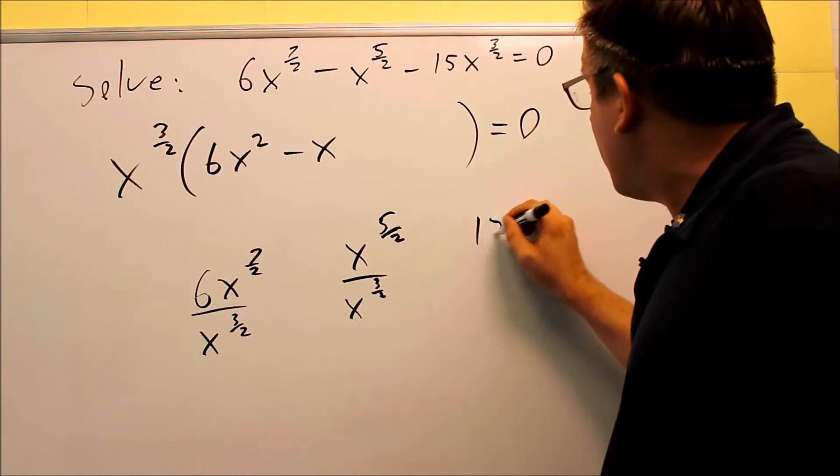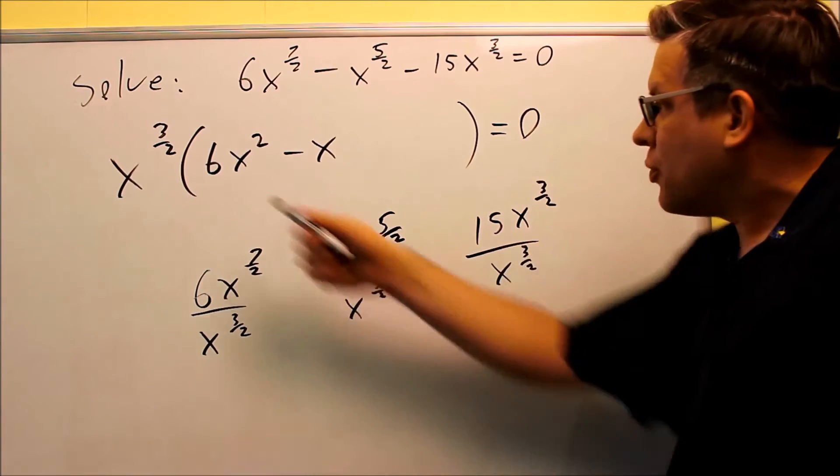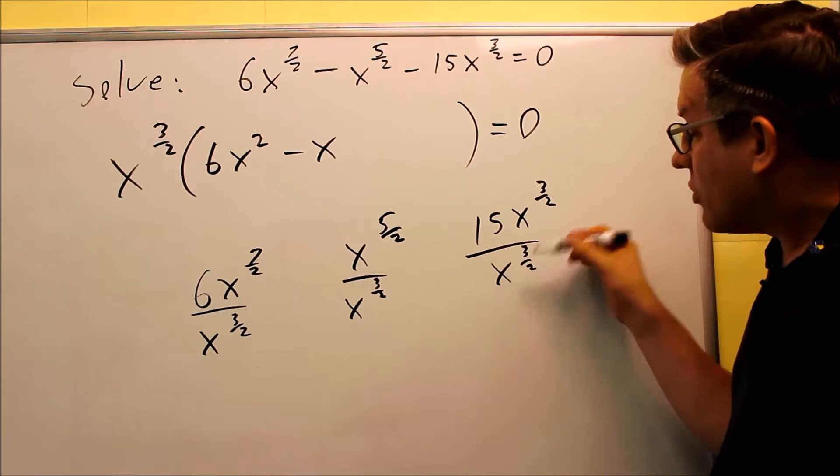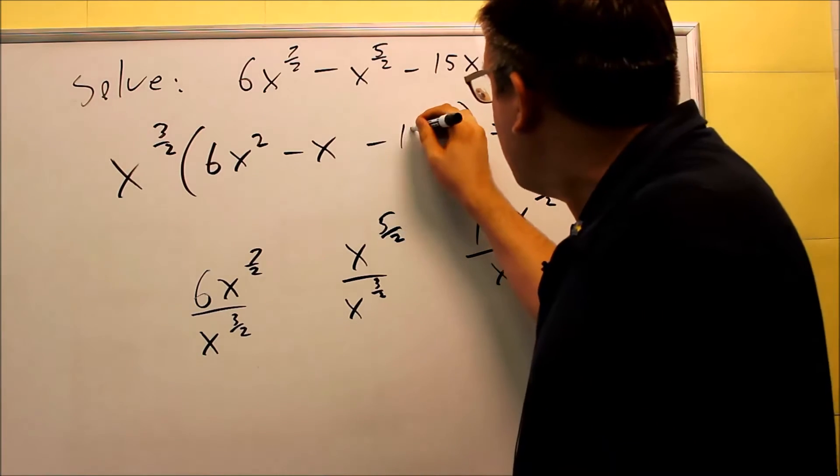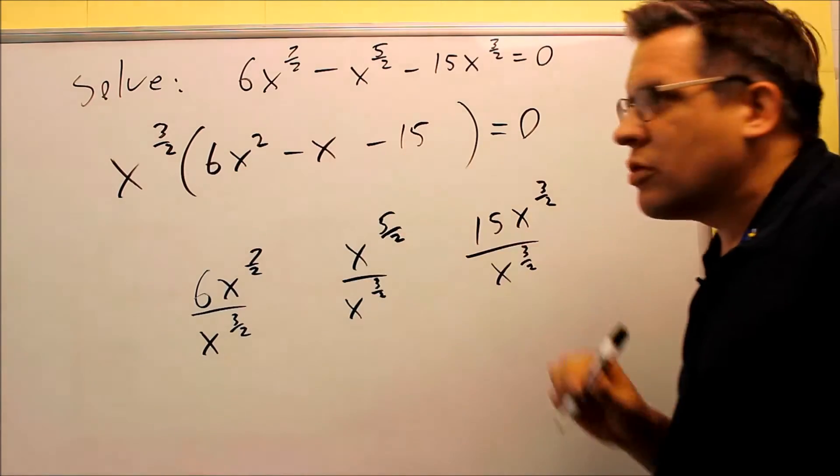Then finally, we have 15x to the three halves, and you're dividing it by x to the three halves because you're pulling it out. So subtract these, and x's are going to cancel, so you get a minus 15 left over. So by taking this out, you get this as a result.